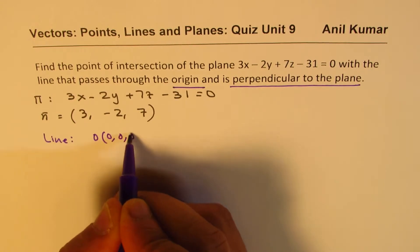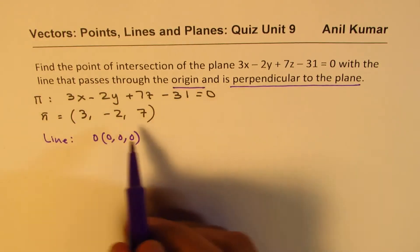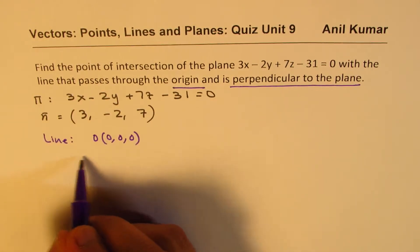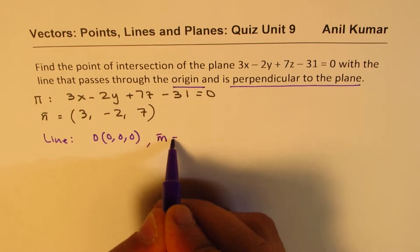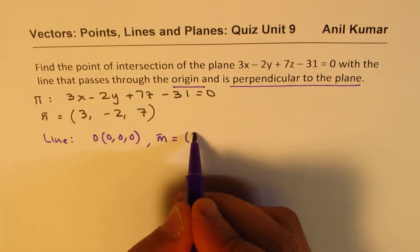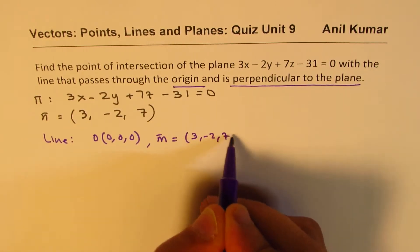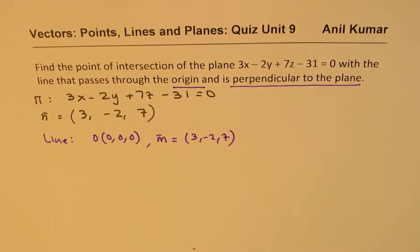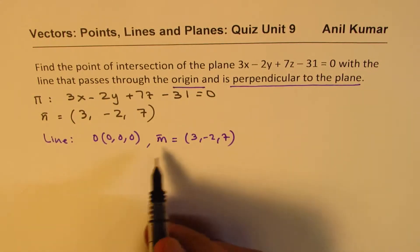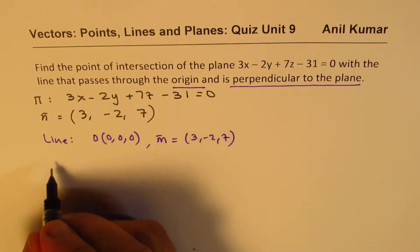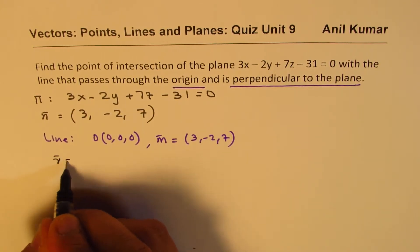And it is perpendicular means that the direction for the line is this itself, (3, -2, 7). So that means I could write down my line as R will be what?